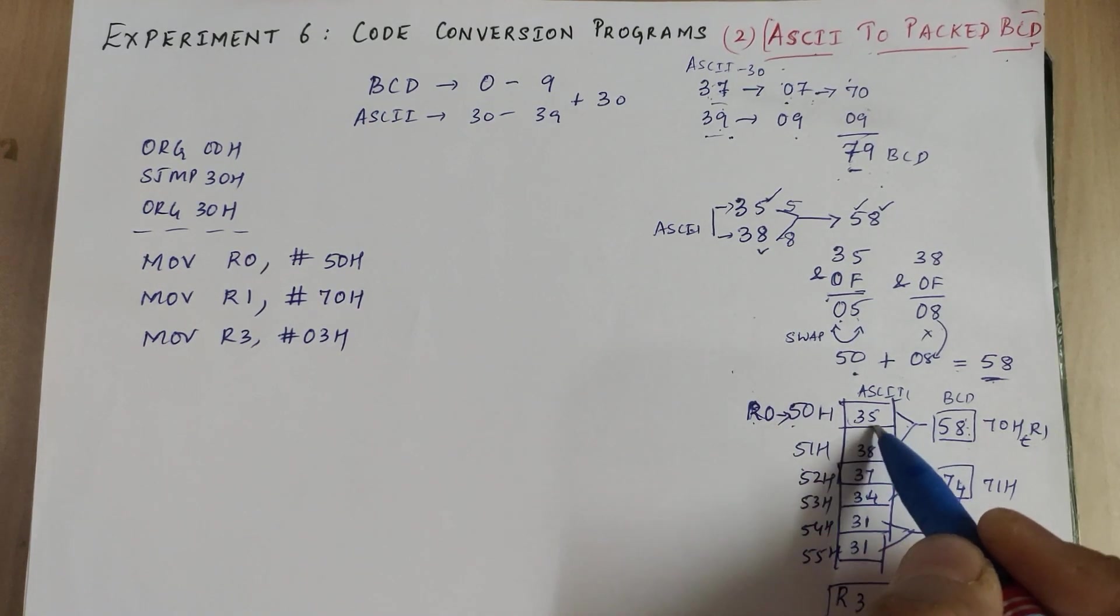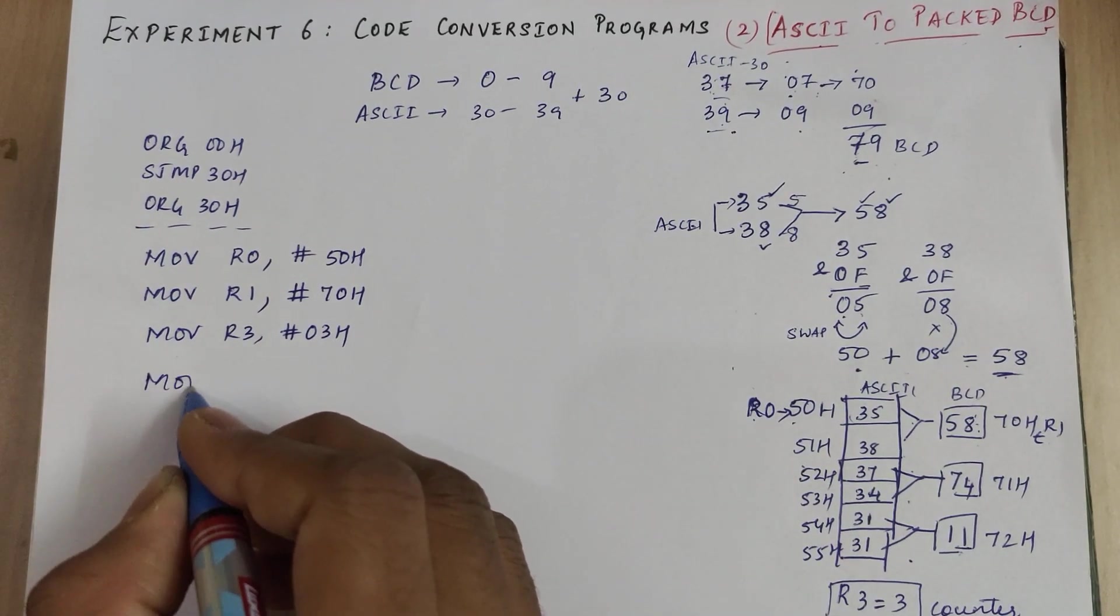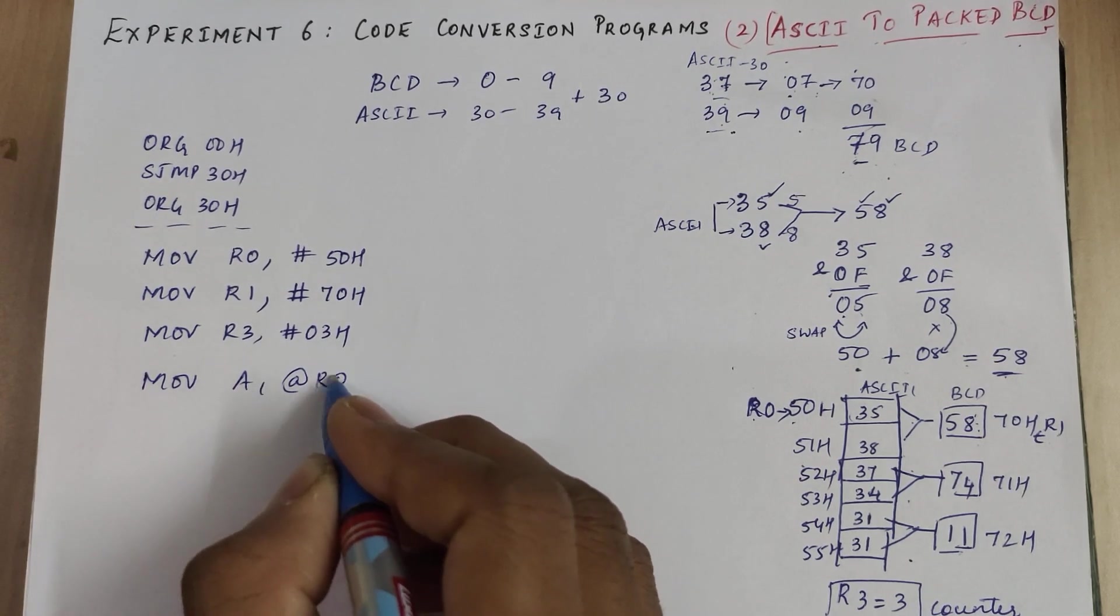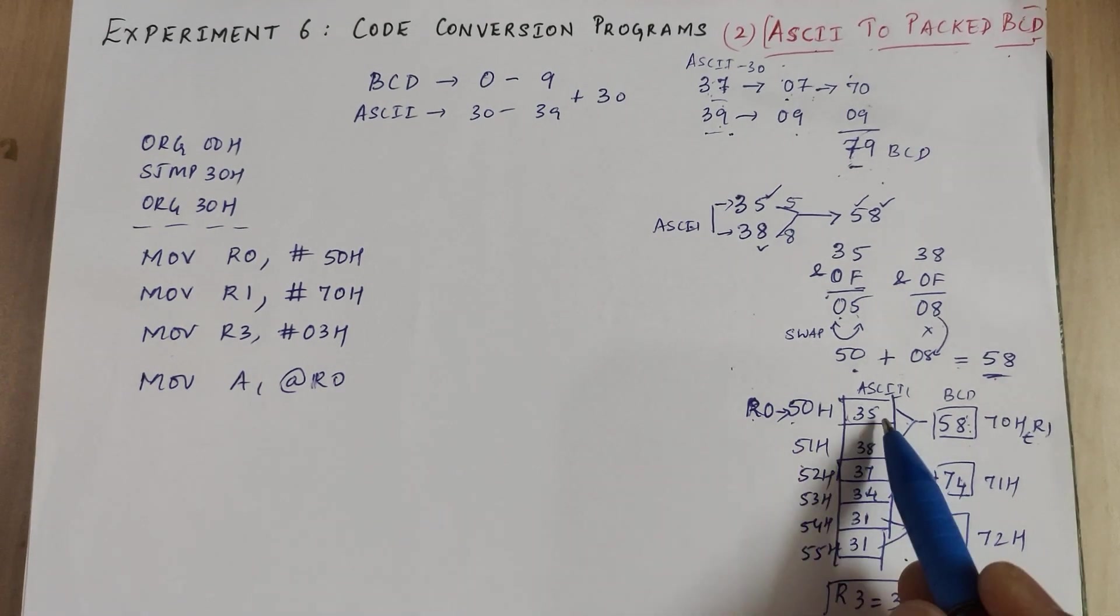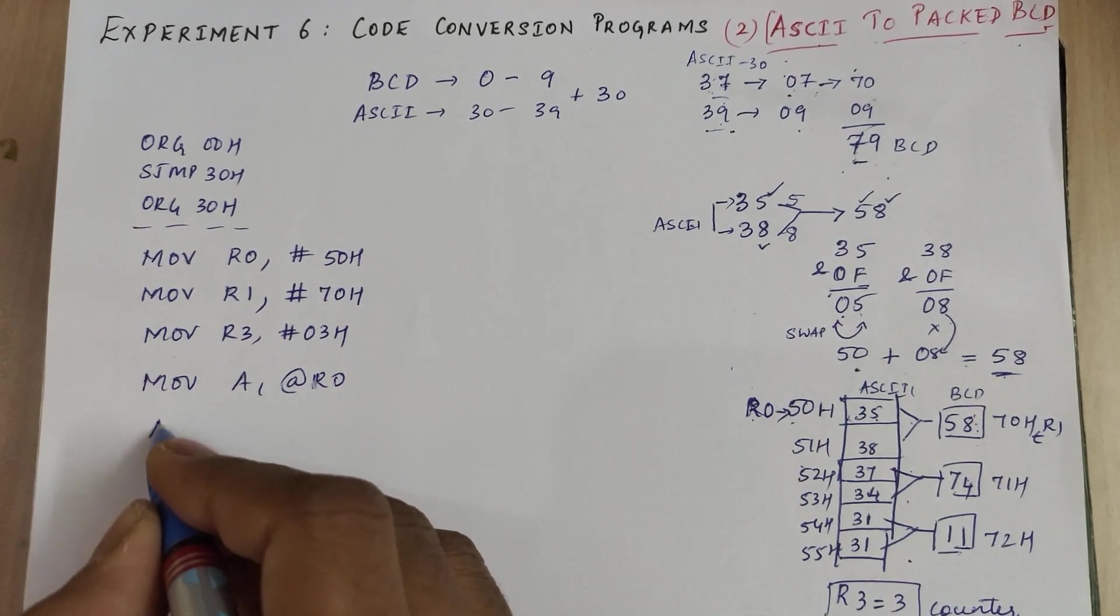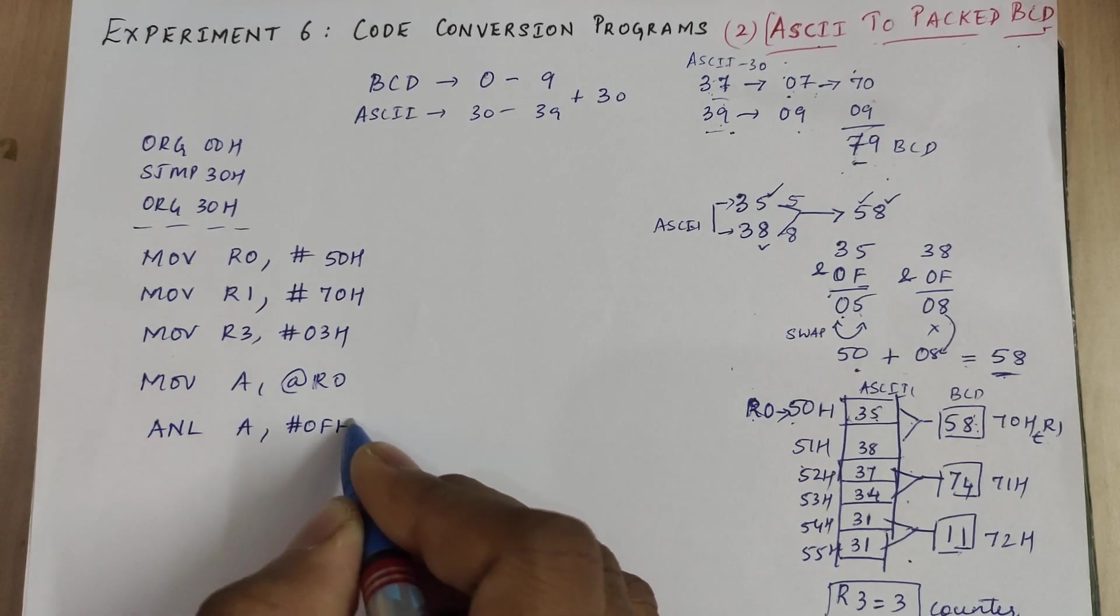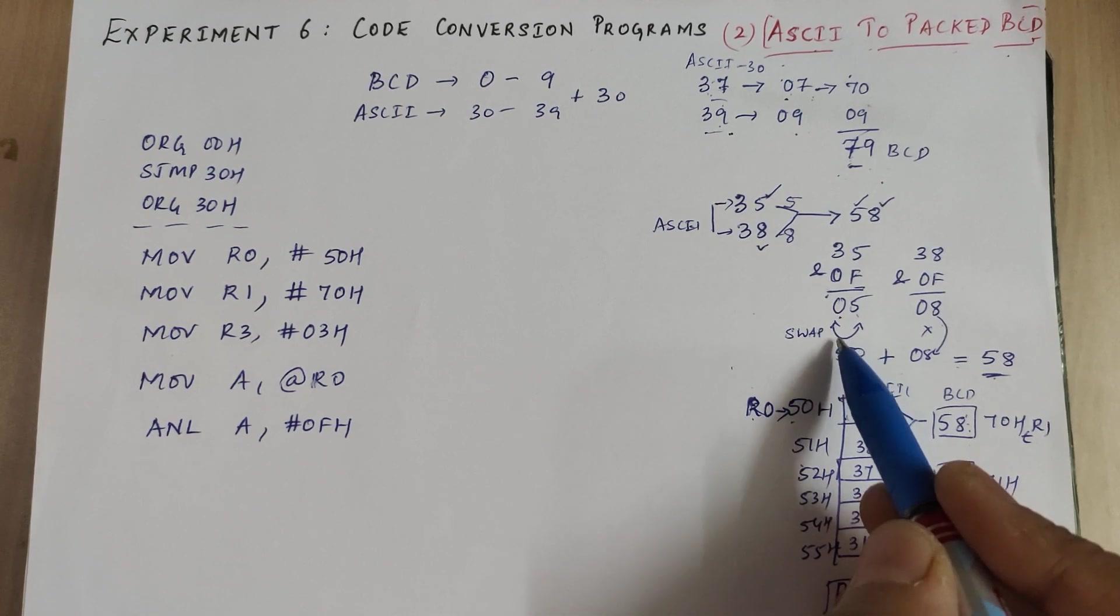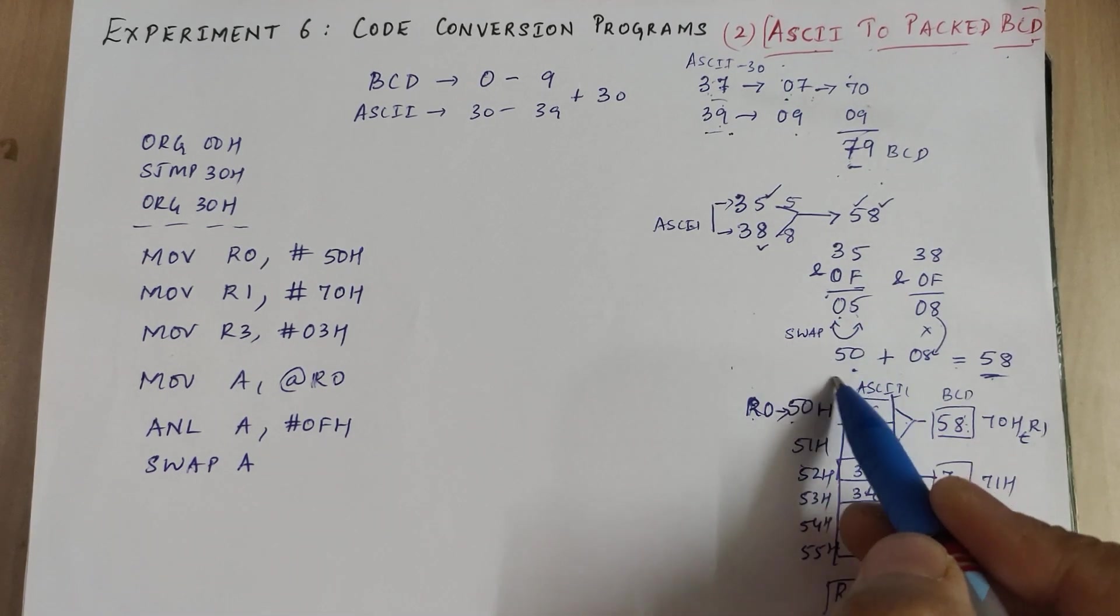Now let us start. Let's take the first ASCII number, 35, into accumulator: move A comma at the rate of R0. The first ASCII number 35 is moved into accumulator. Now we are supposed to AND it with 0F. So we do AND logical A comma hash 0FH. Now we would have got 05. And now we are supposed to swap this. So we write swap A. Now the result becomes 50.